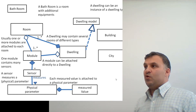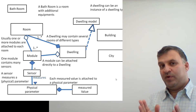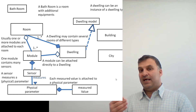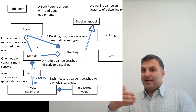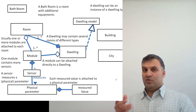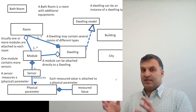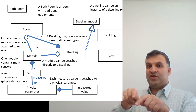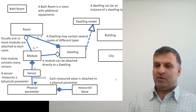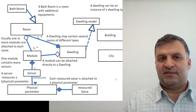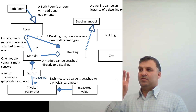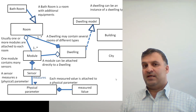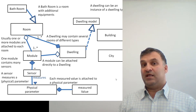A bathroom is a room with additional equipment. A bathroom is a room but it is a subtype of room because we add other things — other attributes, other methods. In our system it is important: perhaps we will put a meter to measure the hot water in the bathroom. We will use inheritance, because a bathroom is a room in which we can put a module, but we can also put another type of sensor like the electrical meter or hot water meter.